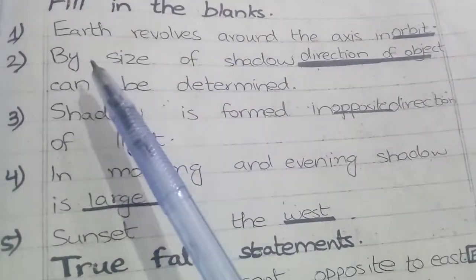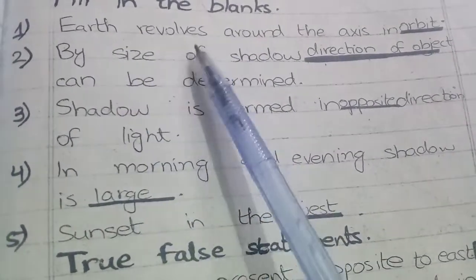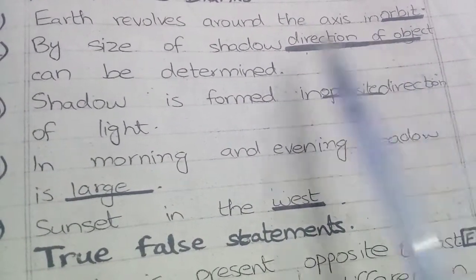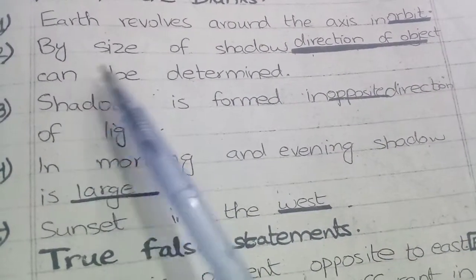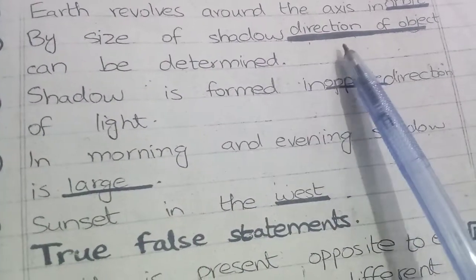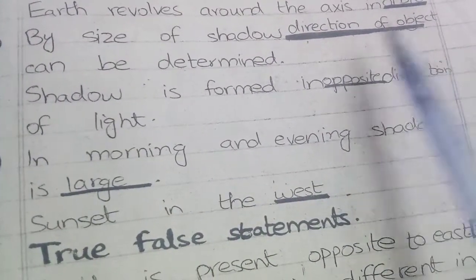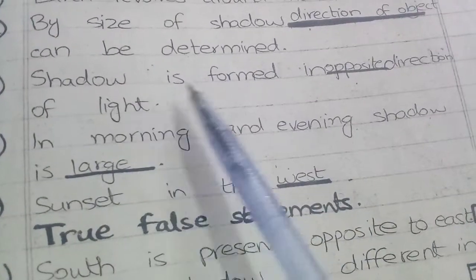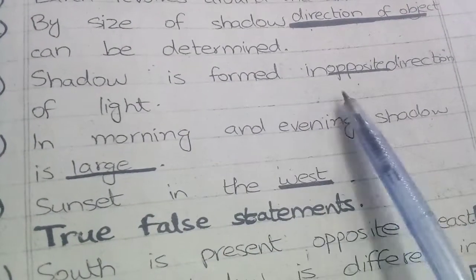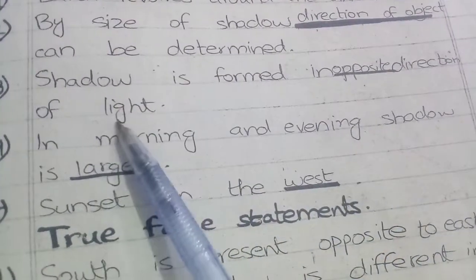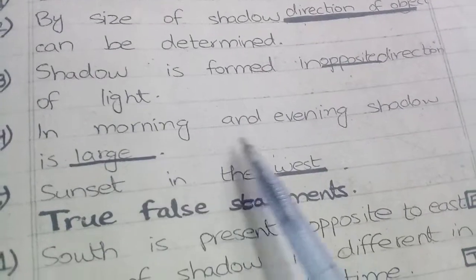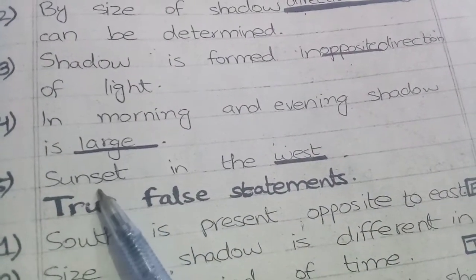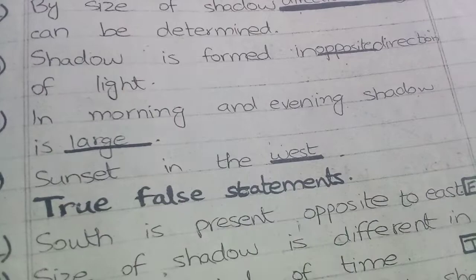Fill in the blanks: Earth revolves around the axis in orbit. By size of shadow and direction of object, we can determine the shadow. Shadow is formed in the opposite direction of light. In morning and evening, shadow is large. Sunset is in the west.